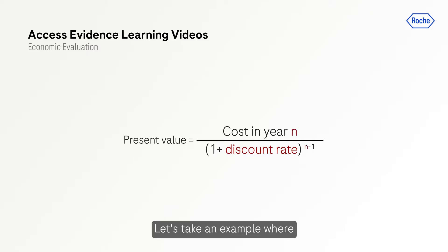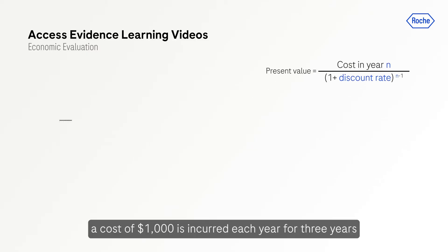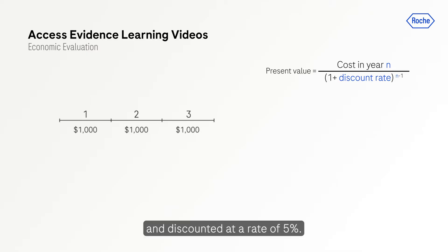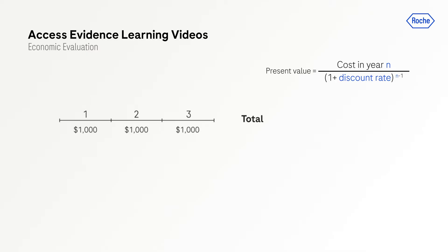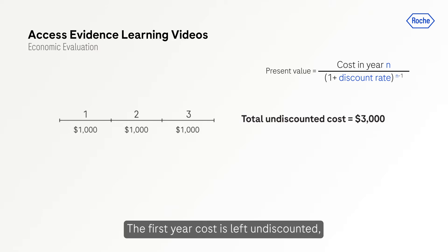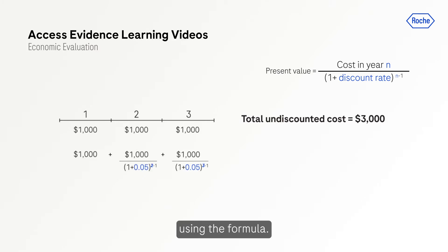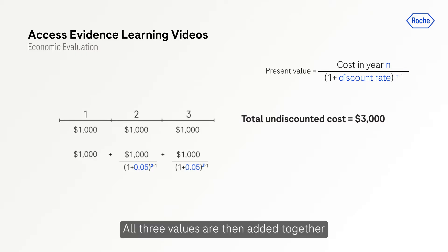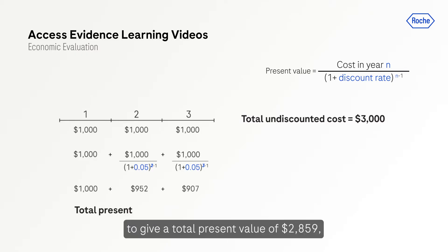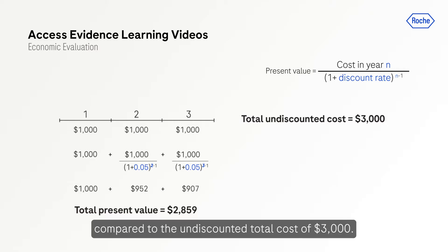Let's take an example where a cost of one thousand dollars is incurred each year for three years, discounted at a rate of five percent. The first year cost is left undiscounted, and costs occurring in years two and three are discounted using the formula. All three values are then added together to give a total present value of two thousand eight hundred and fifty-nine dollars, compared to the undiscounted total cost of three thousand dollars.